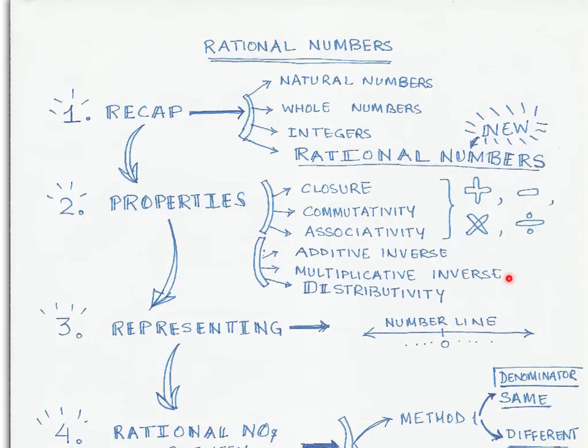Now I just wanted to remind you that all these properties like closure, commutativity, associativity, and distributivity, we have studied all this for numbers that have been introduced earlier, for example, whole numbers and integers. We are going to study these properties for rational numbers in this chapter.